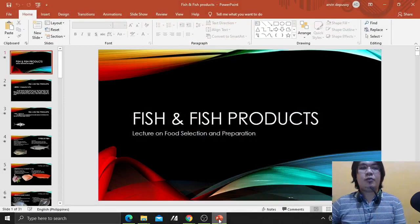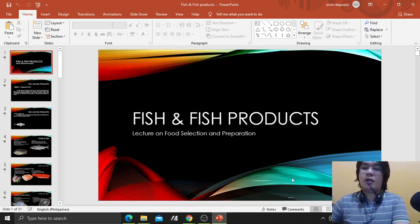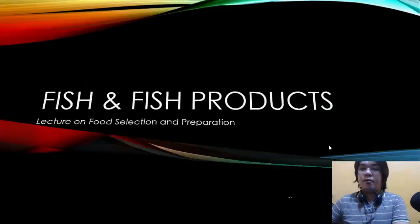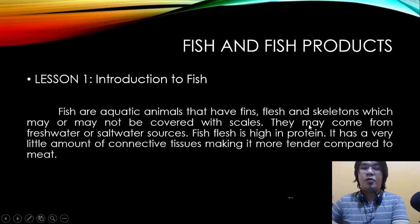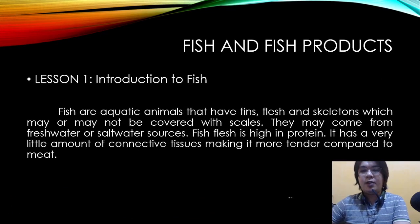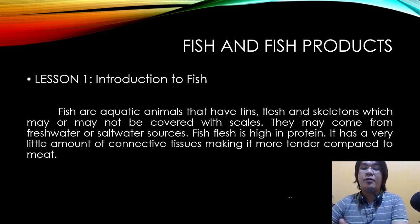Good afternoon everyone. Our topic for today is about fish and fish products — a lecture on food selection and preparation. Fish are aquatic animals that have fins, flesh, and skeletons which may or may not be covered with scales. They may come from fresh water or salt water. Fish flesh is high in protein and has very little connective tissue, making it more tender compared to meat.